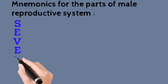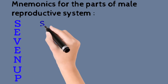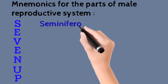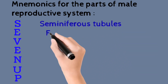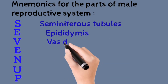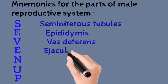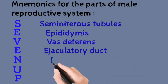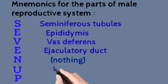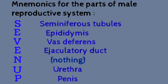This mnemonic is 'SEVEN UP.' Seven Up is very easy to remember. S stands for seminiferous tubules, E for epididymis, V for vas deferens, E for ejaculatory ducts, N doesn't stand for anything, U for urethra, and P for penis. This will help you to remember the names.